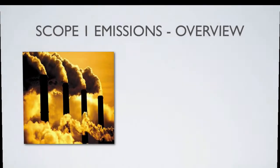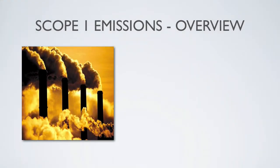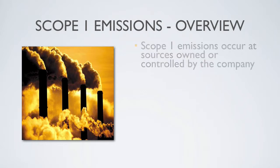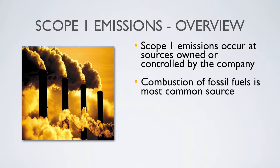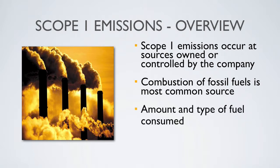Scope 1 emissions are those that occur at sources that are owned or controlled by the company. The most common source of Scope 1 emissions is the combustion of fossil fuels. When gathering information for Scope 1, the ultimate activity data is the amount and type of fuel consumed. The simplest way to collect this data is usually through fuel purchase records.